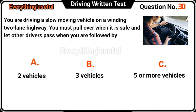You are driving a slow-moving vehicle on a winding two-lane highway. You must pull over when it's safe and let other drivers pass when you are followed by several vehicles.